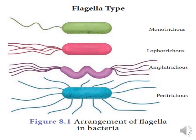Bacteria are also classified according to the number and arrangement of flagella. Monotrichous — only one flagellum present at one end, e.g. Vibrio cholerae. Lophotrichous — more than one flagellum present at one end as a tuft, e.g. Pseudomonas. Amphitrichous — 'amphi' means two — a tuft of flagella at both ends, e.g. Rhodospirillum rubrum. Peritrichous — 'peri' means around — flagella are present all around the bacteria, e.g. E. coli. Atrichous — 'a' means without — there are no flagella in the bacteria, e.g. Corynebacterium diphtheriae.